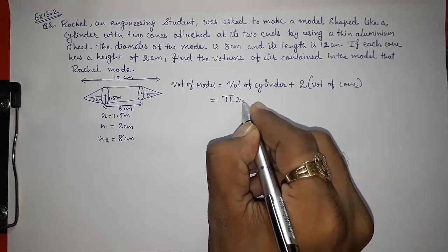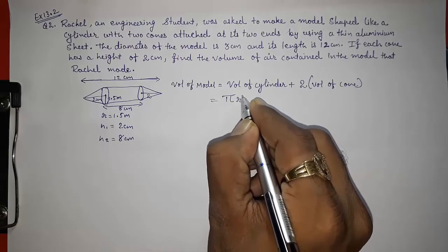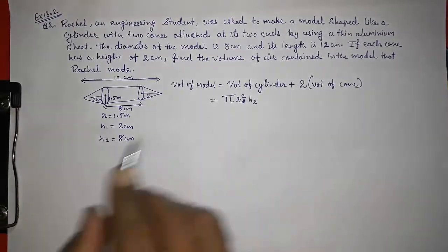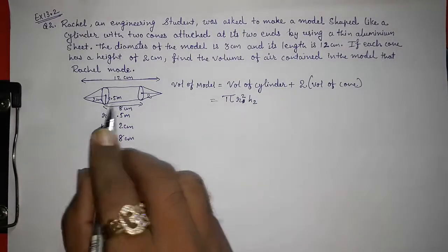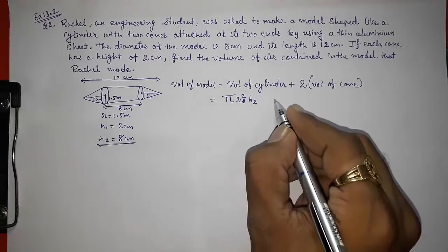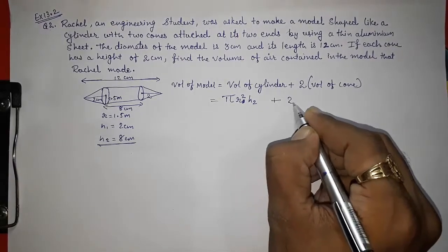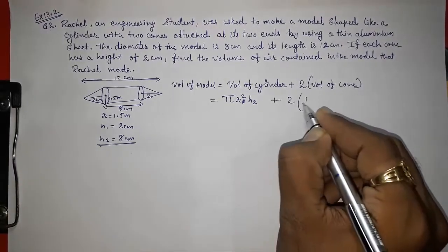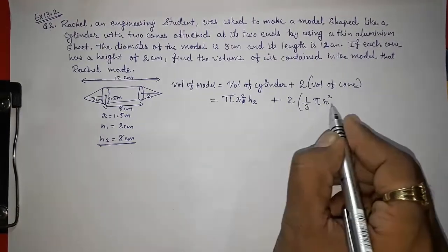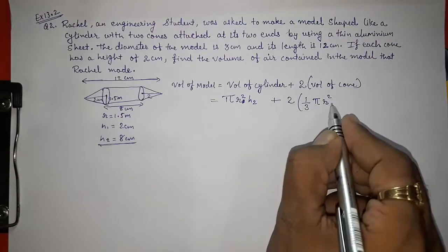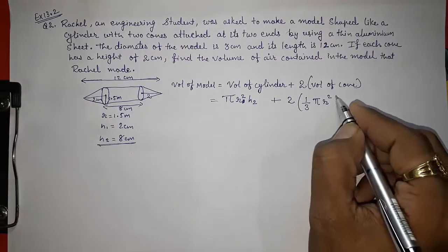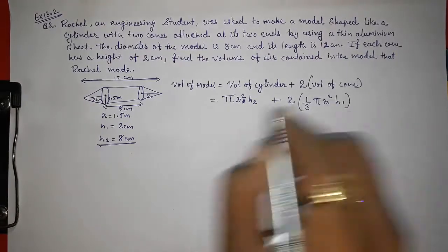So the formula for finding the volume of cylinder is π r² h2. Why h2? Because the height of the cylinder is 8. And we had taken here h2 as 8. And then here 2 volume of cone, that is 1/3 π r² h1. Actually both the radius are same. That's why we are taking only r. But in height both heights are different. So here we are taking h2 and here we are going to take h1.